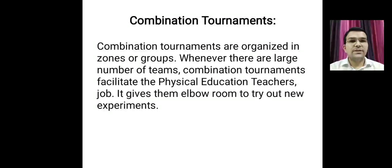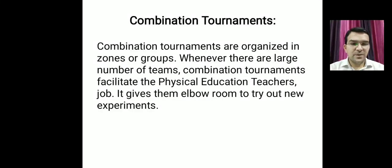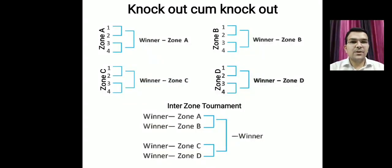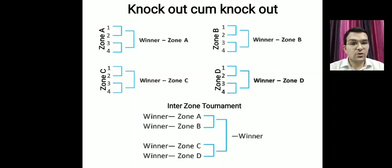A combination tournament is a combination of both knockout and league formats used together as per convenience. One type is knockout-come-knockout: with sixteen teams, we divide into four zones of four teams each, conduct zone-wise matches, pick the winner from each zone, and conduct an inter-zone knockout tournament to find the ultimate winner.